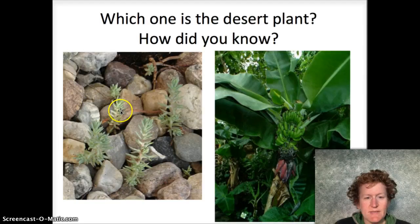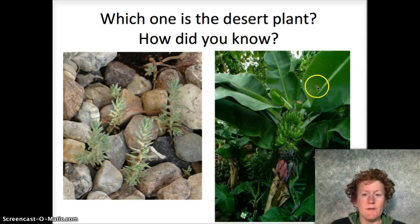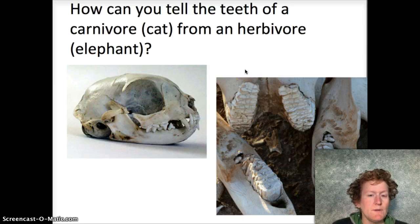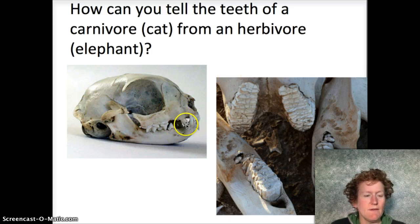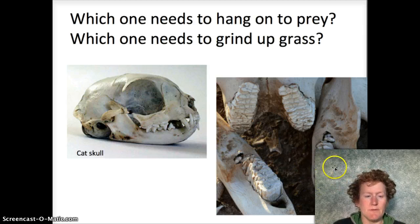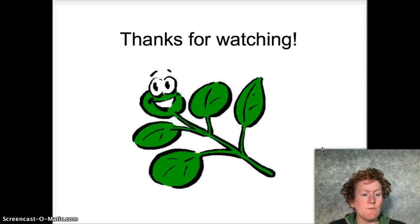We know that this is a desert plant because it has small leaves — small leaves help plants not lose water in the desert. Over here in the rainforest, this banana tree has large leaves. If you want to know about structure-function relationships in plants, look at the size of the leaves. This cat has sharp pointy teeth for tearing meat; this elephant has large grinding teeth for chewing up plants. The cat hangs on to prey with sharp teeth and rips it up, while the elephant grinds up grass with large flat teeth. Thanks for watching and good luck on your quiz — this is Miss R, Biology, signing off.